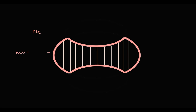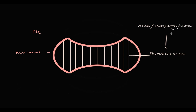Red blood cells have a plasma membrane and also a cytoskeleton, which is composed of specific proteins such as ankyrin, band 3 protein, protein 4.2, and spectrin. The cytoskeleton determines the biconcave shape and flexibility of red blood cells.